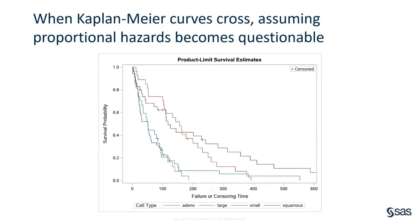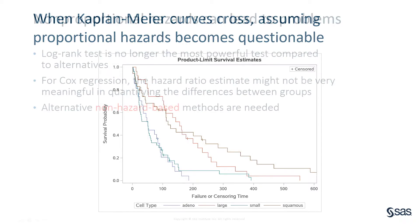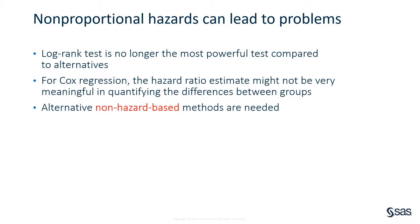A typical violation of the PH assumption occurs when the two survival curves cross. This implies that the corresponding hazard functions would also cross and therefore violates the PH assumption. Because the log-rank statistic is essentially a weighted sum of the hazard function over time, the log-rank test can lose much of its power to detect the true difference in survival. Results from the Cox PH regression have the same problem. When the true hazard ratio changes over time, the estimated hazard ratio from the Cox model ends up being a weighted average of the time-varying hazard ratios, and the weights depend on the underlying survival and the censoring distributions, and therefore cannot be generalized straightforwardly.